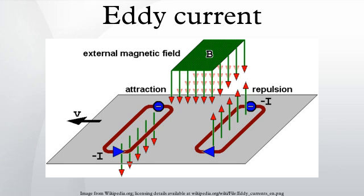Eddy currents generate resistive losses that transform some forms of energy, such as kinetic energy, into heat. This Joule heating reduces efficiency of iron core transformers and electric motors and other devices that use changing magnetic fields.